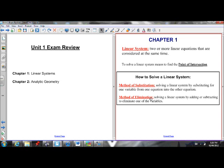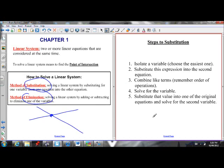First of all, what's a linear system? A linear system is two or more linear equations we consider at the same time. So we have two lines, we're considering them at the same time. What does it mean to solve a linear system? That means to find out the coordinates of this point of intersection. How do we do that? Either substitution or elimination. Let's go over both of them.